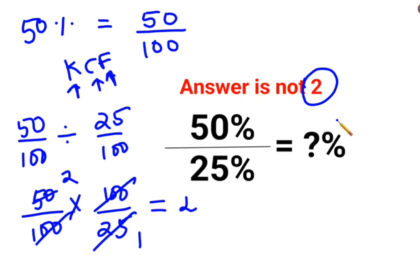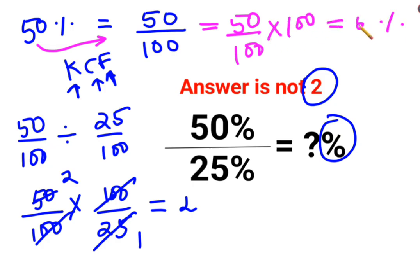But they are looking for the answer in terms of percentage. Now realize, whenever you had a percentage and wanted to convert it into a number, you divided by 100. If I want this 50 upon 100 to be converted into percentage, I need to multiply by 100. So that becomes 50%. So in order to convert 2 into percentage, I need to multiply by 100. So the answer for this question is supposed to be 200%.